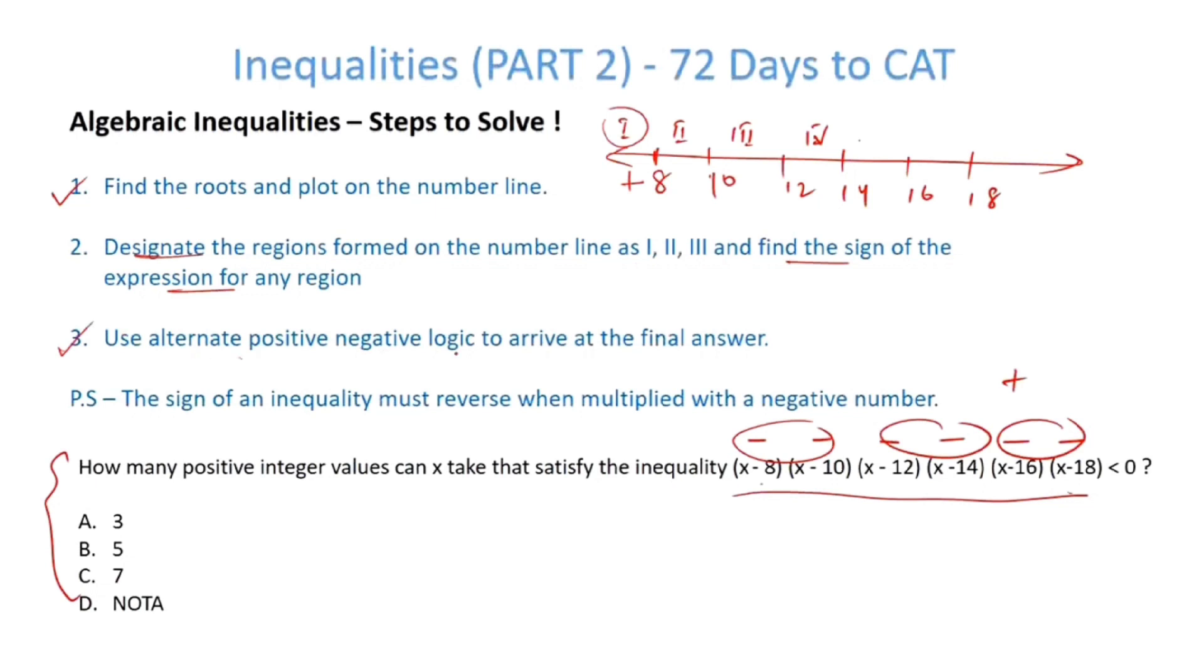Use alternate positive, negative logic. Now, if this region is positive, the next must be negative. You can try and check it. You can put 9 from here and you can check it. So, this is negative, alternate, positive, again negative, positive, negative, positive. Overall, I need less than 0. So, I am interested in negative regions. So, I have three negative regions, region number 2, region number 4 and region number 6. So, positive integer value, first is 9, second is 13 and third is 17. So, three values here. Answer is answer option A. I hope this is clear to you. With that logic, you can solve almost all kinds of algebraic inequalities.